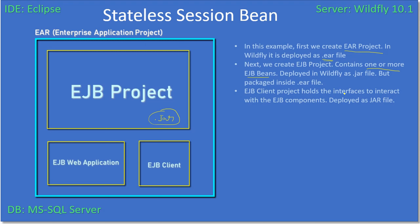The EJB client project holds the interfaces to interact with the EJB components, and it is also deployed as a JAR file. The EJB client holds interfaces — if we define some functionality, say fx1, and it is implemented in the EJB bean, the EJB client will expose fx1 as an interface function. The outside world calls this EJB client to access EJB functionality. This client JAR is also deployed inside the EAR project.